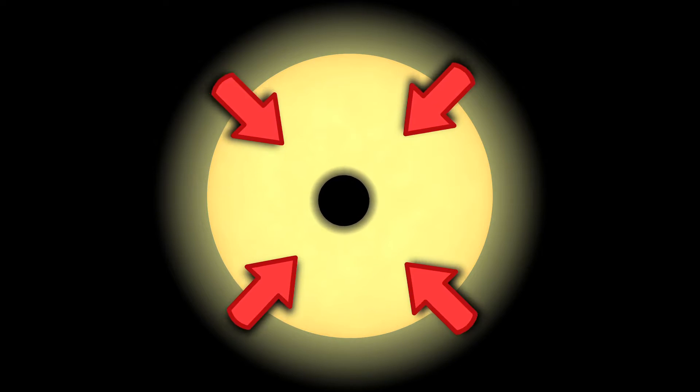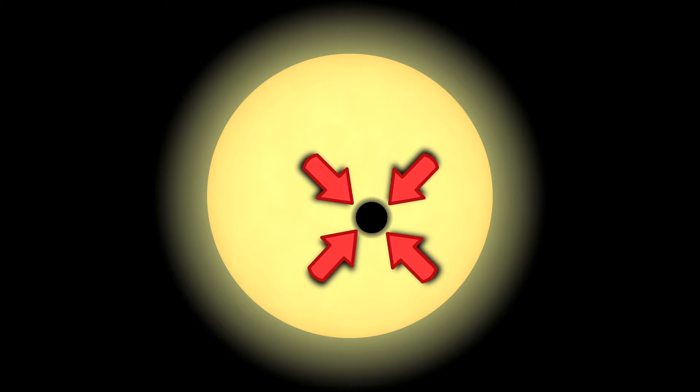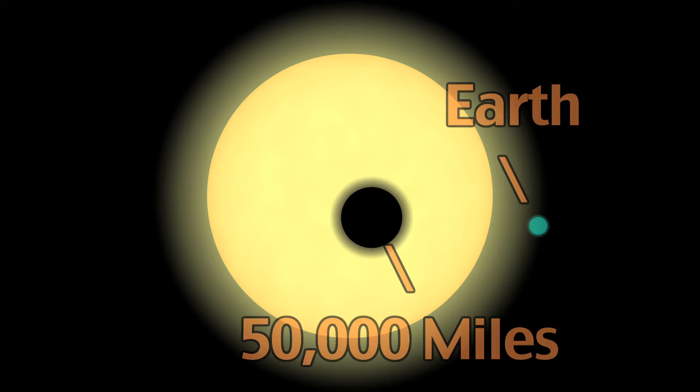Sunspots move across the surface of the sun by expanding and contracting and can be as large as 50,000 miles, which is large enough to see from the Earth without a telescope.